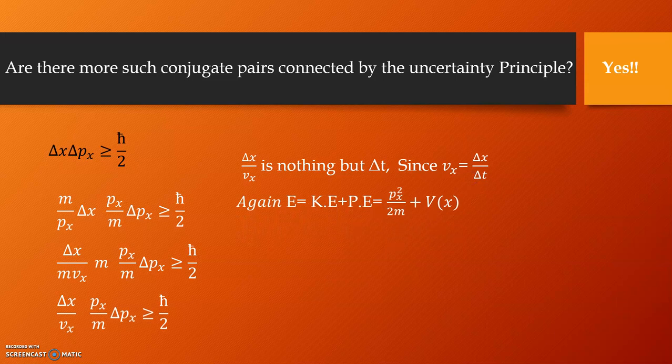Focusing on the other part of the equation, let us begin by remembering that the total mechanical energy of any system is given by the sum of kinetic and potential energies, which in our system can be written as px square by 2m plus V, where V is the potential energy and remember it is only a function of position.